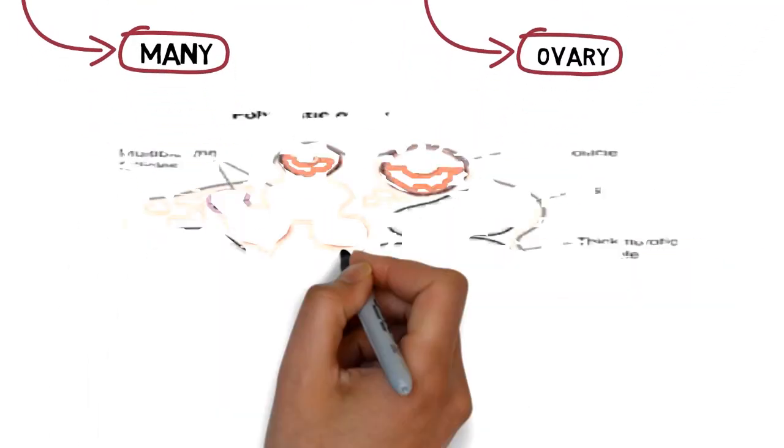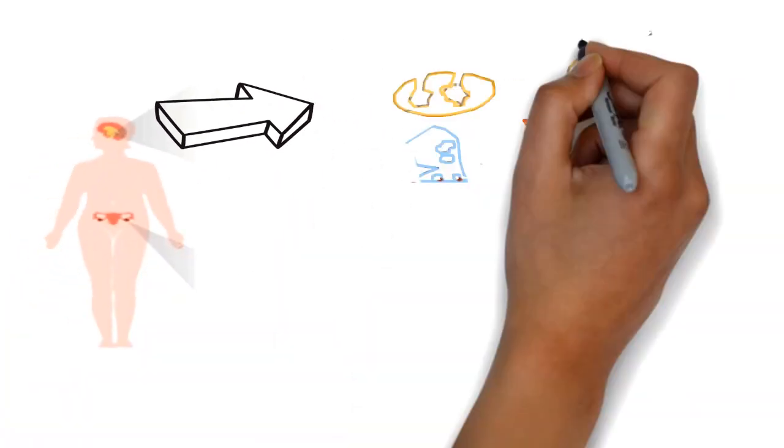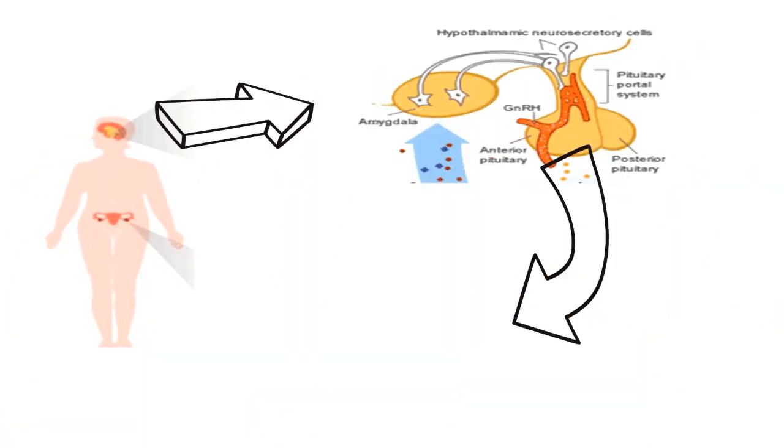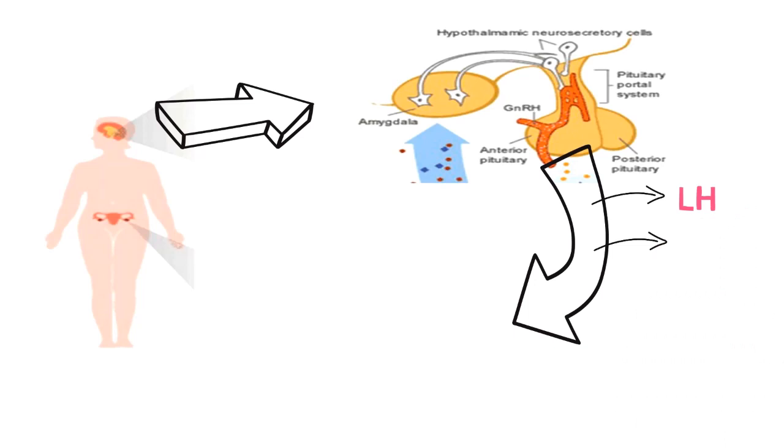Now let's first talk about the normal hormonal cycle in females. The hypothalamus stimulates the pituitary to release gonadotropic releasing hormones like LH, responsible for ovulation, and FSH, which is mainly responsible for the follicular maturation. These two together act on the ovaries.